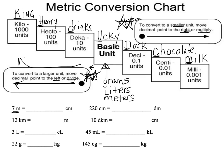Let's do this first practice one. We have 7 meters, so we're at our basic unit, and I need to go to centimeters. So I'm going to be going one spot, two spots. The decimal point in 7 is kind of imaginary, but it's right after the seven — this would be like saying 7.0000. I'm going to move that decimal point two spaces, behind a zero and then behind another zero, which means that now my number is 700.